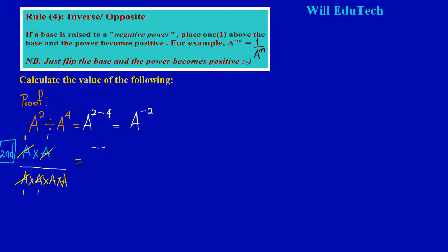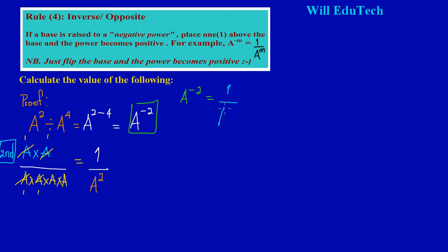After canceling, in the numerator I have one times one, which is just one. In the denominator, two a's remain, which we rewrite as a squared. So the second method gives us one upon a to the positive two. Comparing both methods: the first gave a to the negative two, and the second gave one upon a squared — the powers match but one is negative and one is positive.